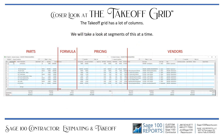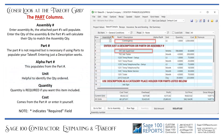Now let's take a closer look at the takeoff grid. The takeoff grid has a lot of columns — we'll take a look at the segments one at a time: the part area, the formulas, the pricing, and the vendors.